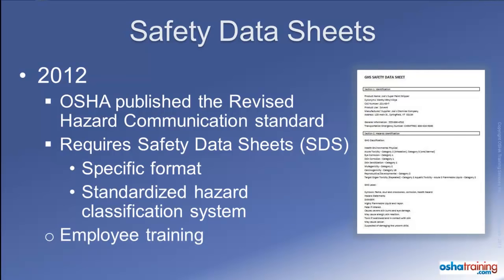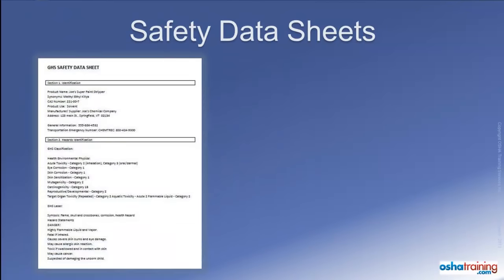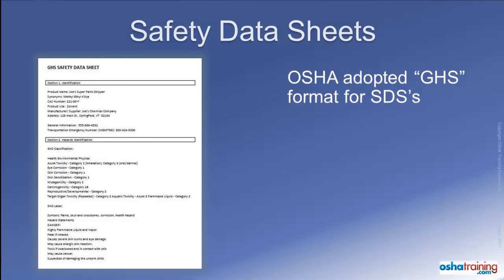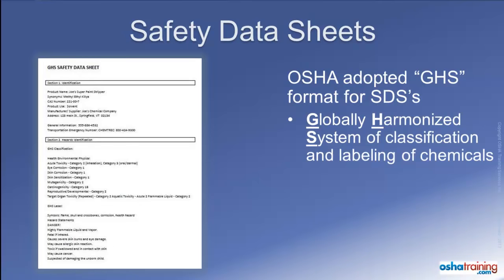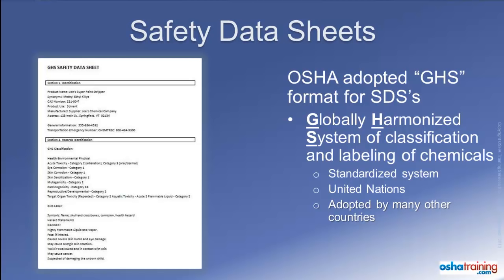The revised HazCom standard now requires that employers train their employees on how to read and understand the new GHS safety data sheet format. So the standard changed from employee right to know to employee right to understand. As part of the revision to their HazCom standard, OSHA adopted the GHS formatting requirements for safety data sheets. GHS stands for the Globally Harmonized System of Classification and Labeling of Chemicals. The GHS is a standardized system, meaning there will be consistency in the information appearing in safety data sheets. This system was developed by the United Nations, which means that, once fully adopted and implemented, safety data sheets for products from around the world will be prepared in a standardized format, which is important in our global economy.